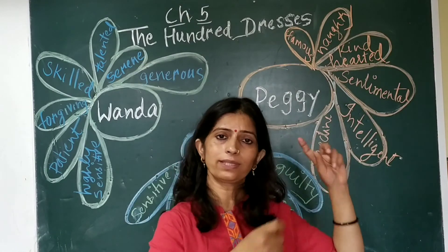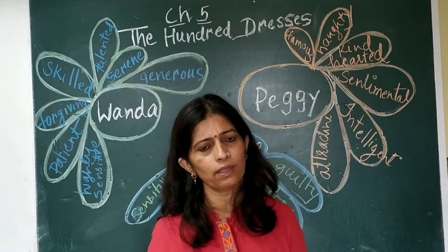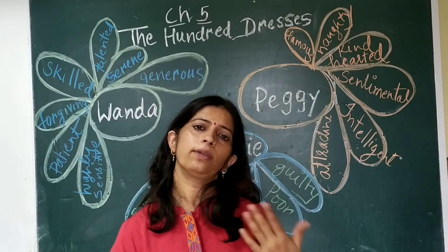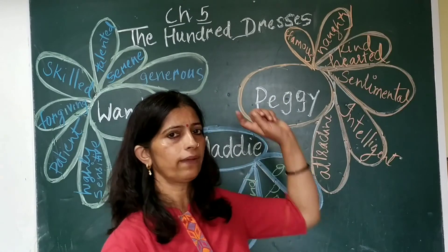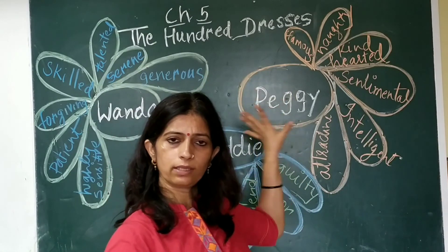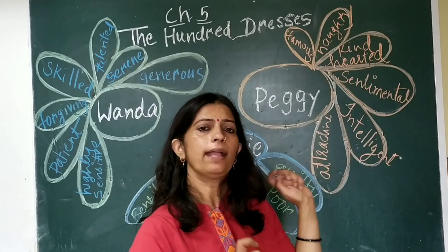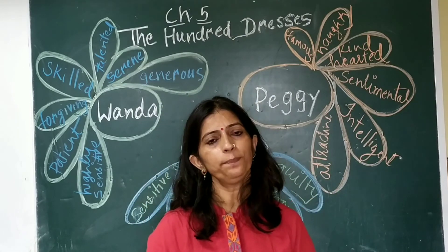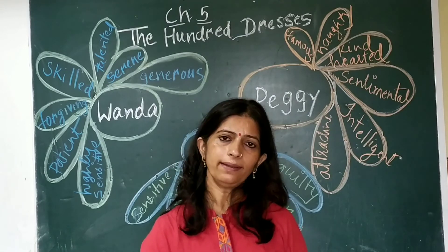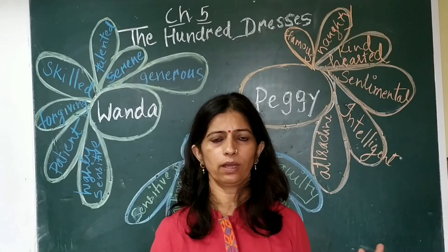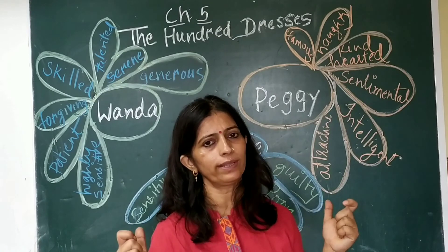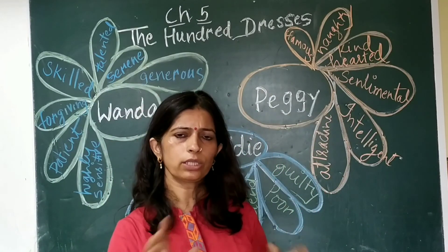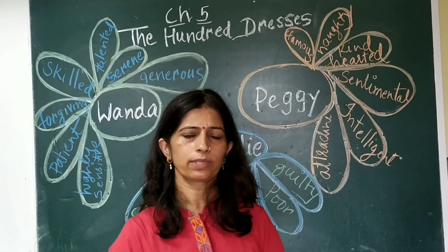Add your own points — what you thought was negative in her, what was positive in the girls. You can add more things after reading the next chapter also. You can also justify the title. Write all three characters in your fair notebook and justify the title — how this title is apt to the chapter. I will send you a copy so you can note down all the points in your fair notebook as well.